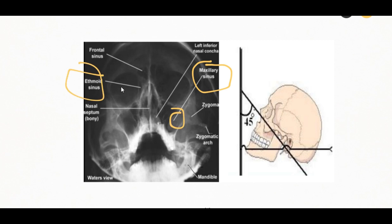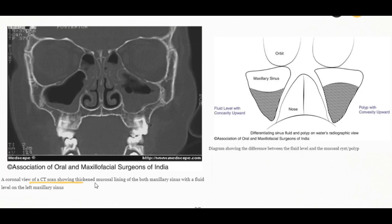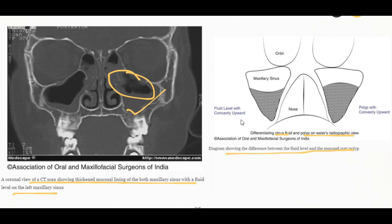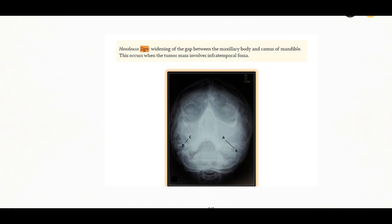In the case of the maxillary sinus on the Waters view, you will see a radio-opacity; the mucous membrane will show thickening; and an air-fluid level may be observed if the radiograph is taken in the head-up position. In case of polyps, the maxillary sinus will show radio-opacity with a convexity pointing upward. In case of malignancy, the sinus is similarly radiopaque, and you will see destruction of the walls of the sinus, which is diagnostic of malignancy. The distance between the anterior lateral wall of the maxilla and the coronoid process of the mandible is measured; if it is increased on one side, it indicates involvement of the infratemporal fossa by the malignancy.